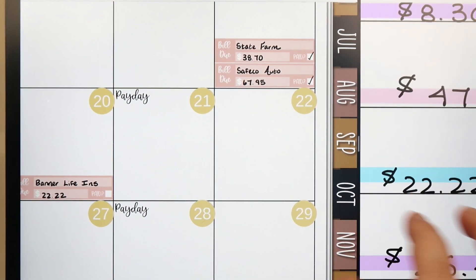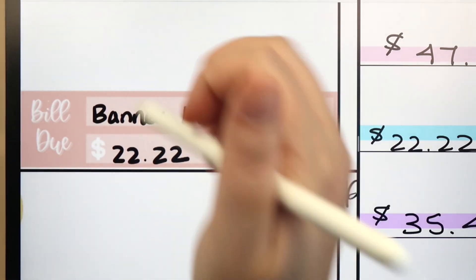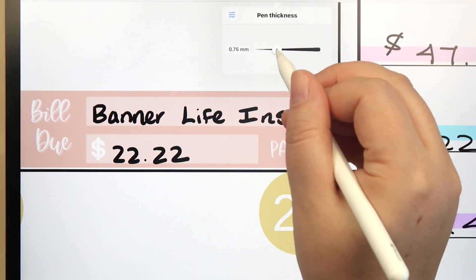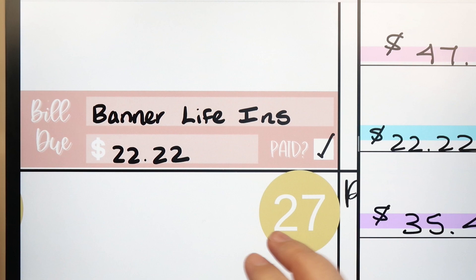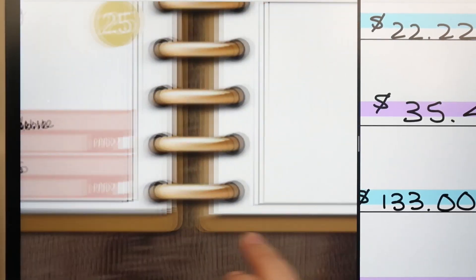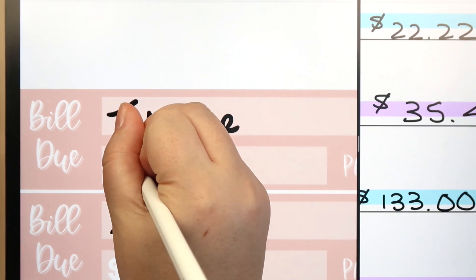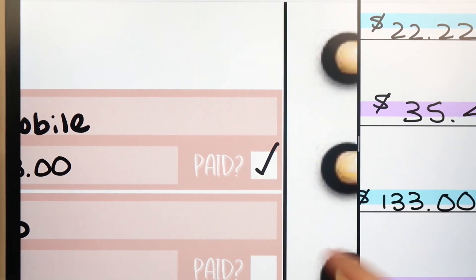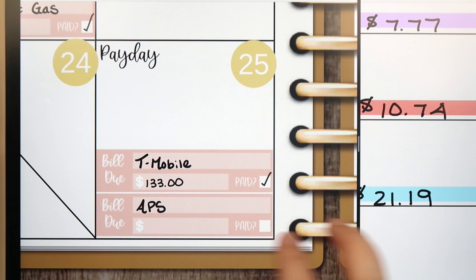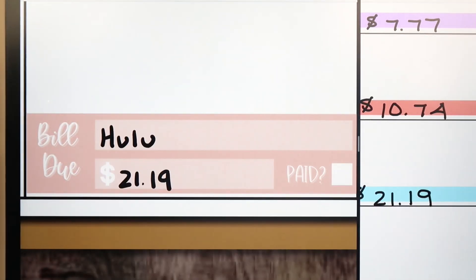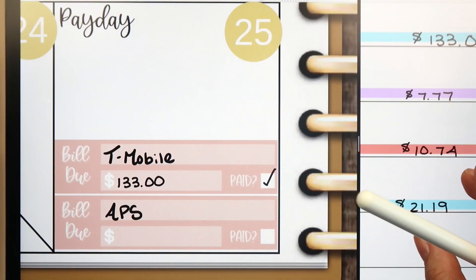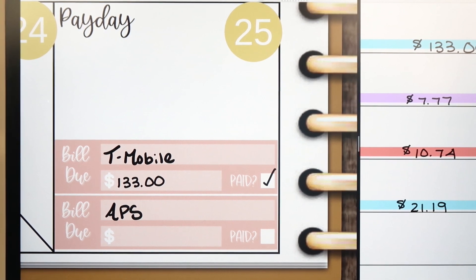So I've got Banner Life here for $22.22 — that was paid, so I'll mark that off. The next one is $133 for T-Mobile. I didn't know what that bill amount would be, so I'll write it in and mark it as paid. APS has not come out yet, and then Hulu did come out for $21.19, so I'll mark that off as well.